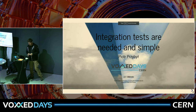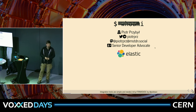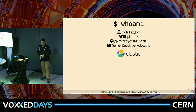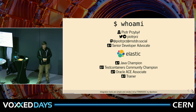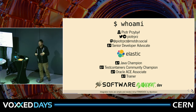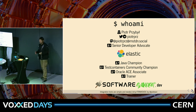Shortly about myself: you can follow me on Twitter, DM me on Telegram, or follow me on Mastodon and other social networks, apart from TikTok. I work as a senior developer advocate for a company called Elastic — you know, for search. I'm also a Java Champion, Testcontainers Community Champion, Oracle Ace, a trainer from time to time, and I blog at softwaregarden.dev.